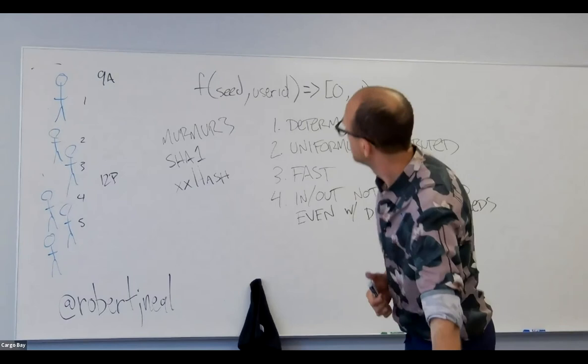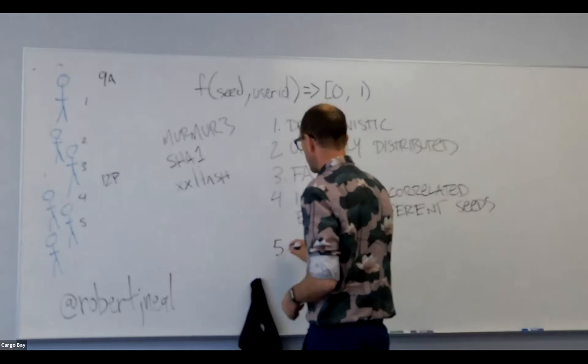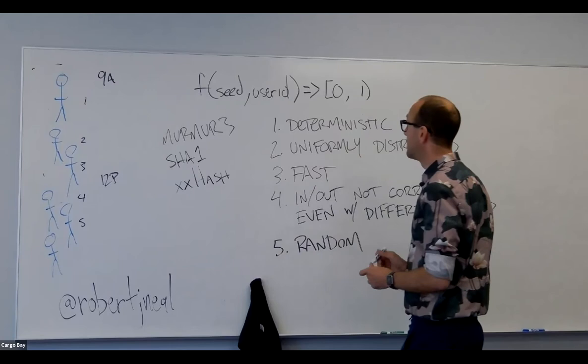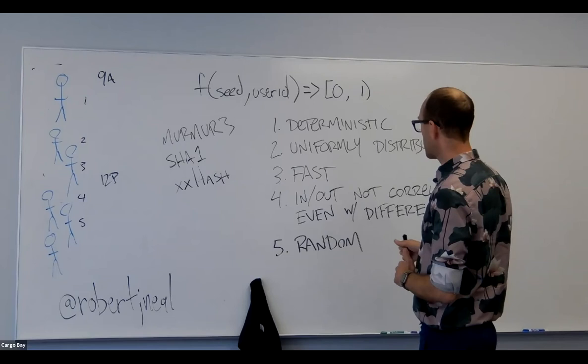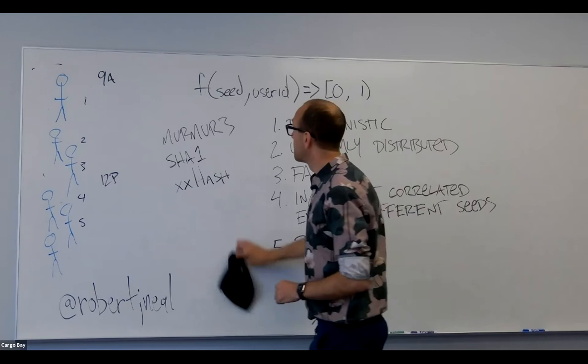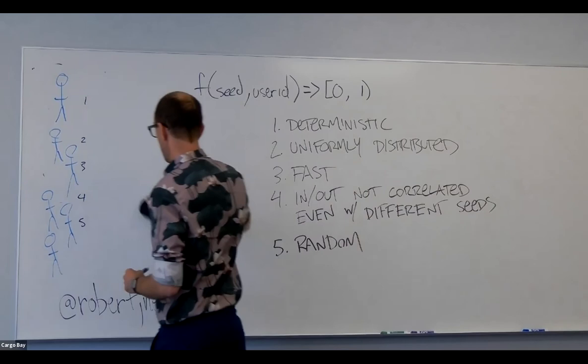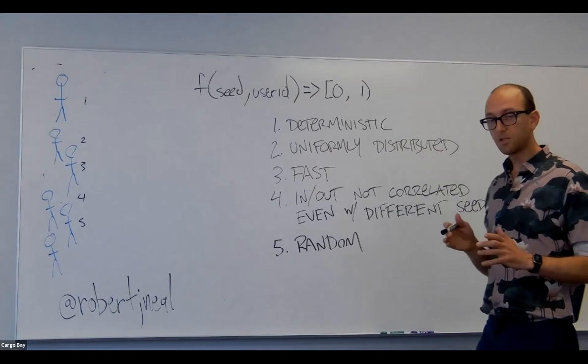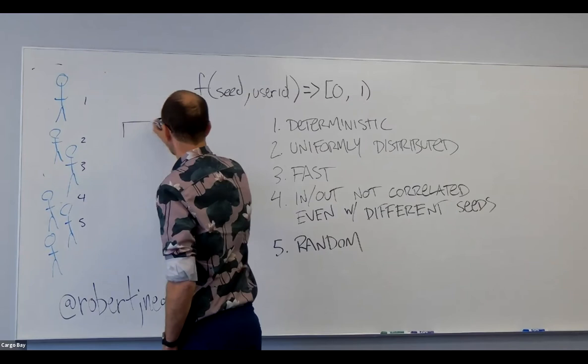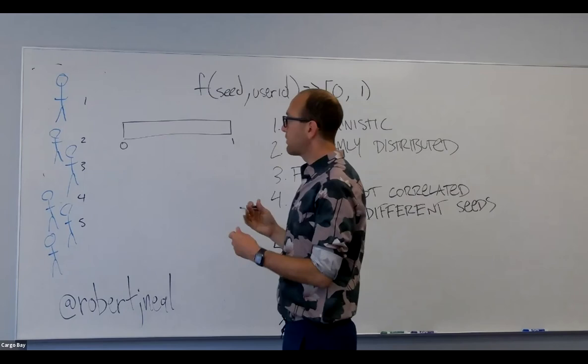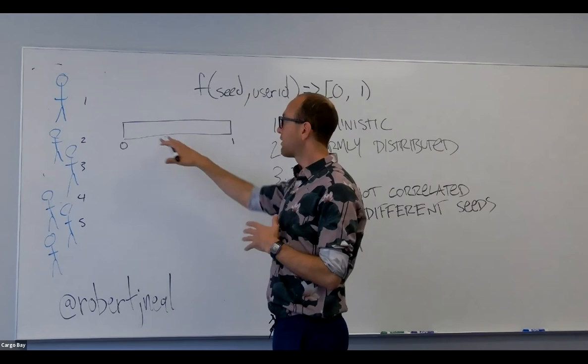One criterion I forgot to mention: the function needs to be random, meaning input and output are not correlated. Let's talk about gotchas with traffic allocation. We talked about this range as the space where you allocate traffic, and you might think: if I have multiple variations, how should those fall in this space? One approach: I have three variations. For A, give it 33% of traffic; for B, 33%; for C, the remaining 34%.